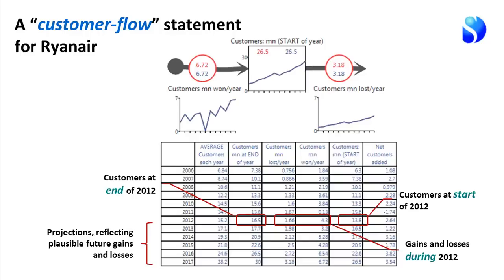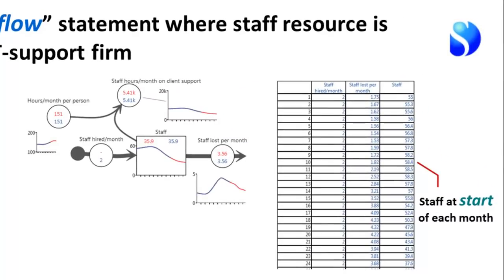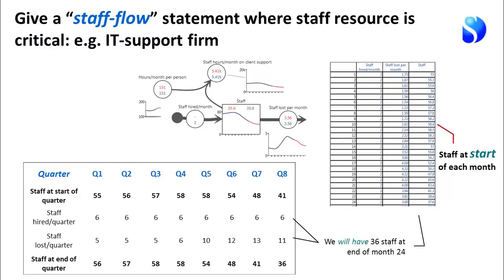The rest of that table simply provides plausible projections reflecting equally plausible future gains and losses for customers. We can do the same with staff. Ryanair isn't especially dependent on critical staff groups, so here's a different example — an IT support firm that is definitely dependent on key staff. On the right we have a table showing staff hired, staff lost, and the staff we have at the start of each month. From that we can very easily generate a quarterly staff flow statement.